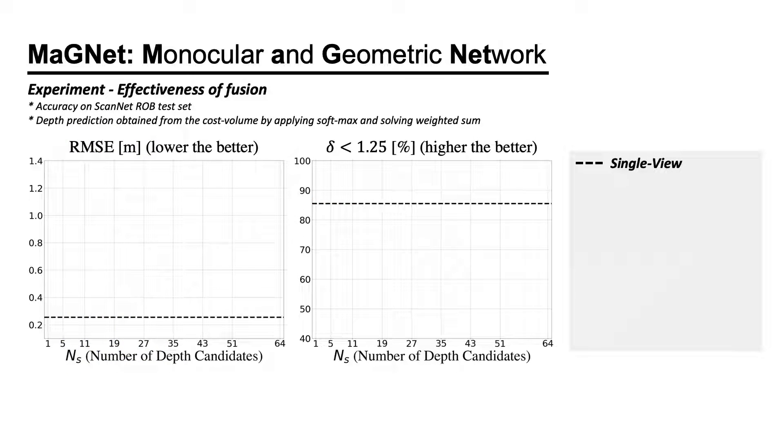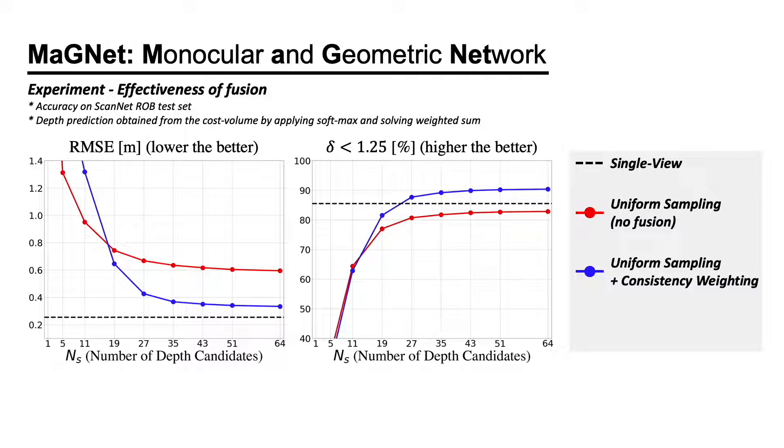Here is an ablation study demonstrating the effectiveness of fusing the single-view depth probability with multi-view geometry. Without the fusion, the accuracy is worse than the single-view predictions, even when a large number of depth candidates are evaluated. With the help of depth consistency rating and probabilistic depth sampling, the network can achieve higher accuracy while evaluating fewer depth candidates.